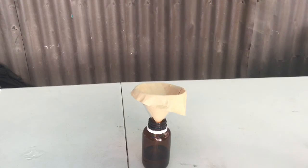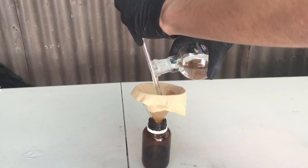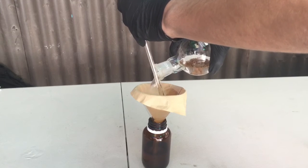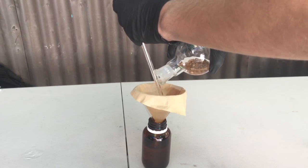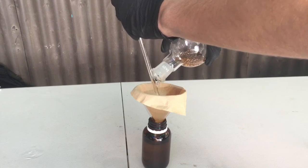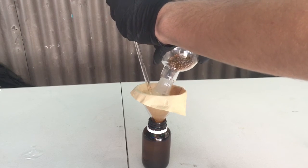The final DCM product was then filtered into a dark bottle. The DCM should be stored in a very cool location or in the fridge as it's very volatile. I kept mine in the fridge.